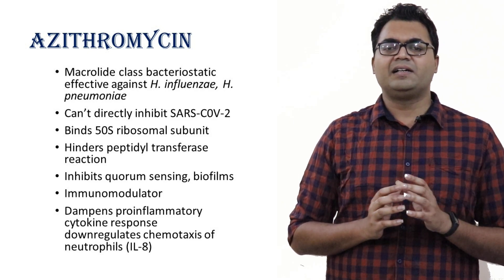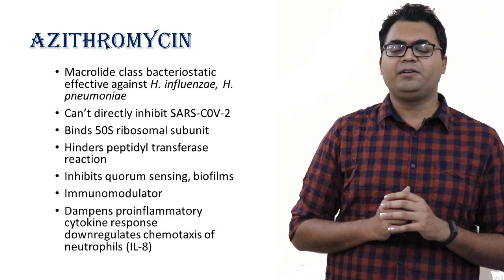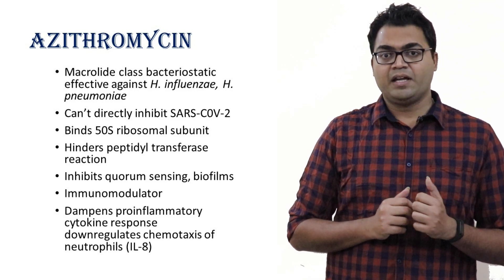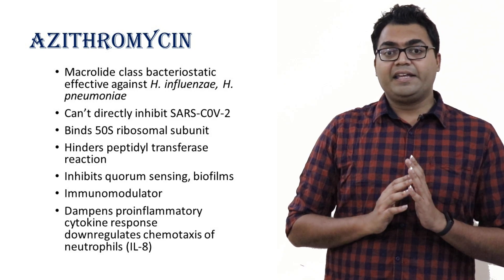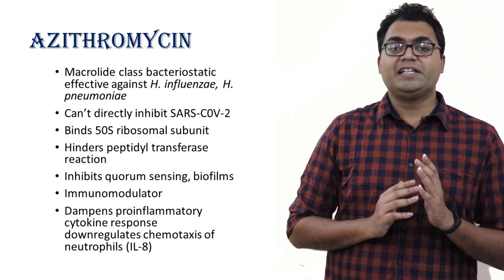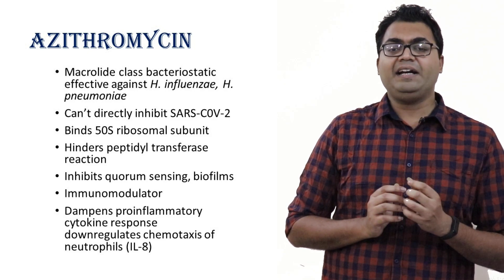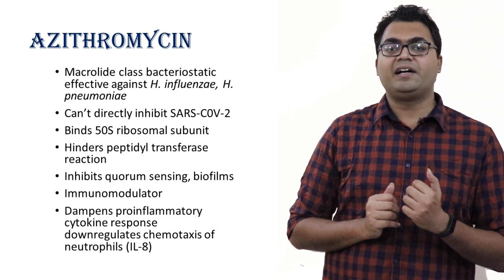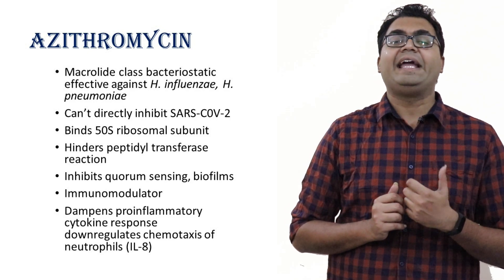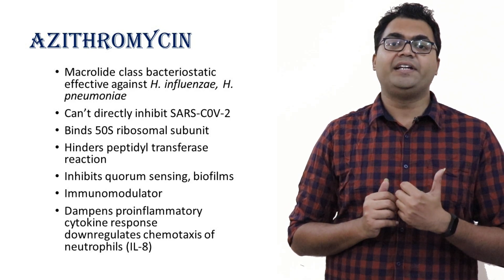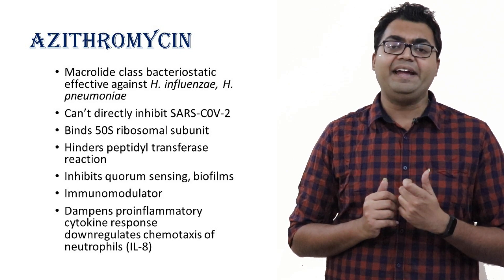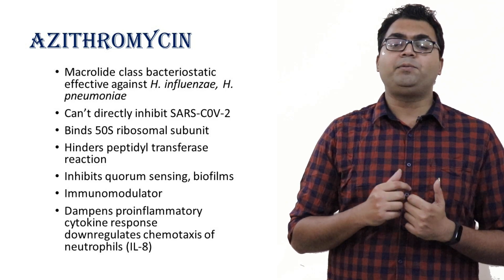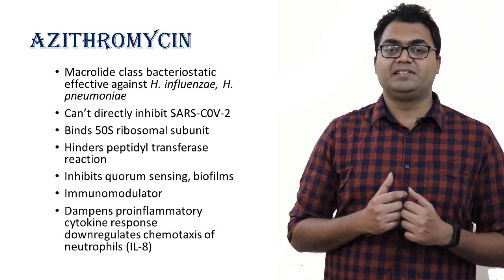Azithromycin has a glimpse of immunomodulatory effect — not completely an immunomodulator. It can tame down IL-6 and also tame down the chemotaxis of neutrophils, which are the backbone of innate immunity, by hindering the production of interleukin-8. It also accelerates apoptosis in the case of neutrophils.